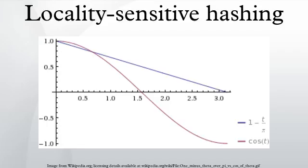Stable distributions: The hash function maps a d-dimensional vector onto a set of integers. Each hash function in the family is indexed by a choice of random and where is a d-dimensional vector with entries chosen independently from a stable distribution and is a real number chosen uniformly from the range. For a fixed, the hash function is given by. Other construction methods for hash functions have been proposed to better fit the data. In particular, k-means hash functions are better in practice than projection-based hash functions, but without any theoretical guarantee.